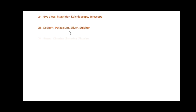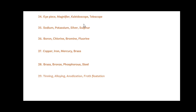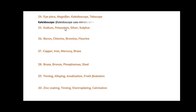Next: eyepiece, magnifier, kaleidoscope and telescope. Friends, in this, kaleidoscope is the odd one out. Since kaleidoscope uses mirrors, while other devices — eyepiece, magnifier and telescope — make use of lenses.